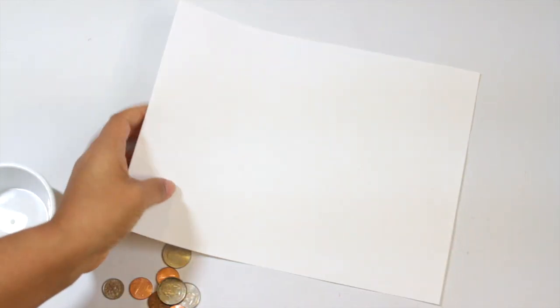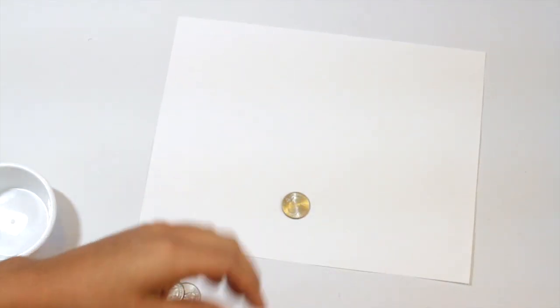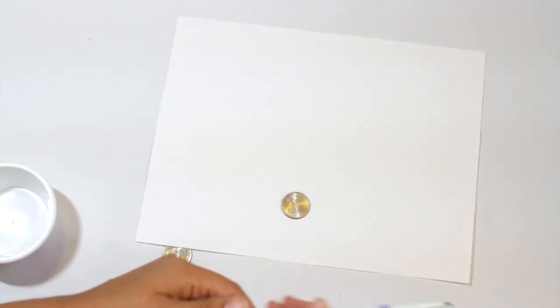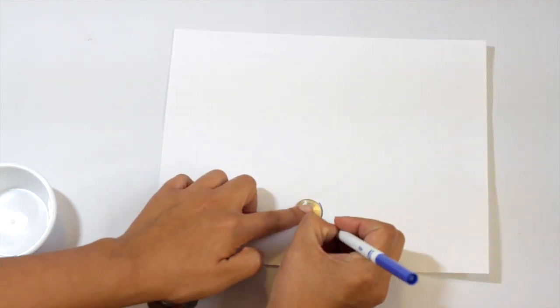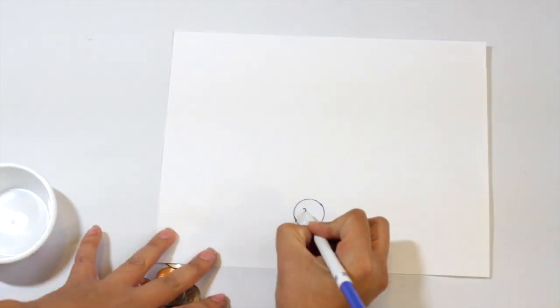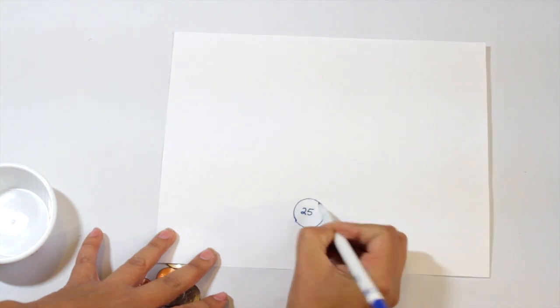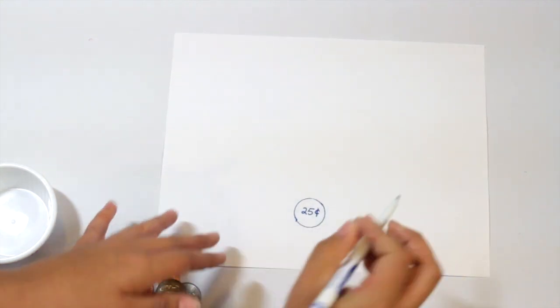I'm just going to take a piece of paper here and some coins and I am going to prep this activity for the kids by tracing the coin on the paper. Then I'm going to write how much that coin is, its value, right inside the circle.